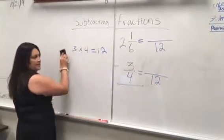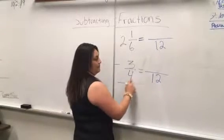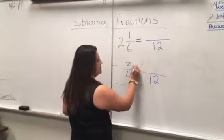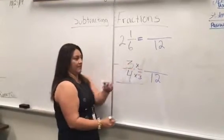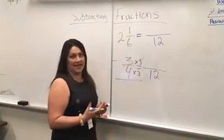For the first fraction, 4 times 3 equals 12. We multiply the numerator by the same number, so 3 times 3 equals 9, giving us 9/12.